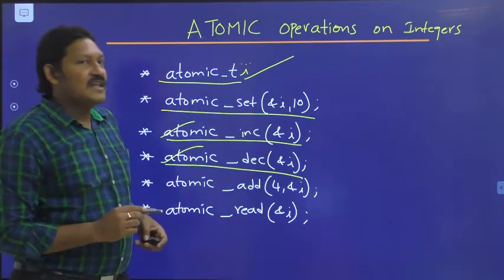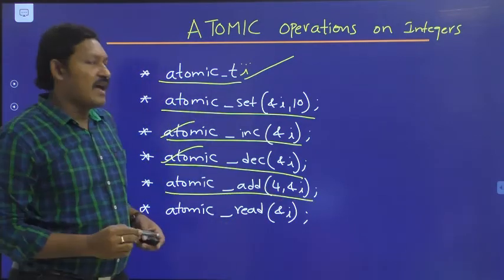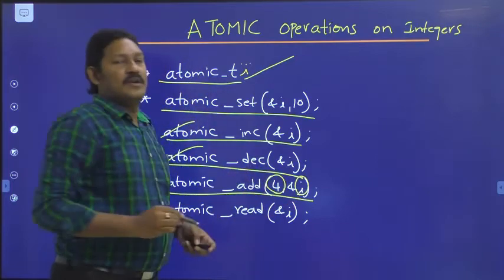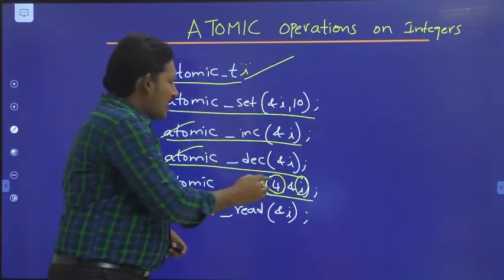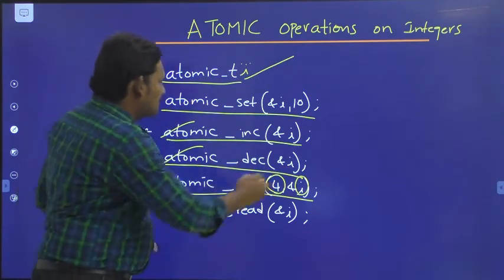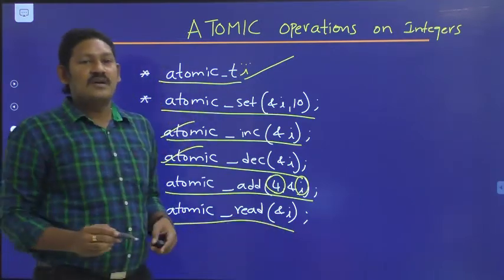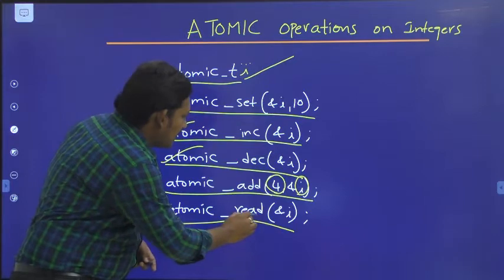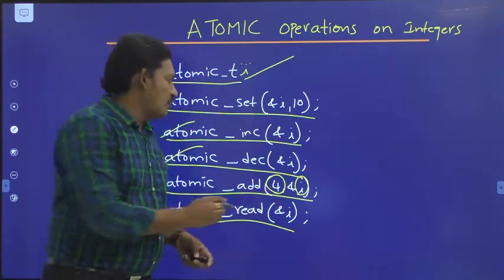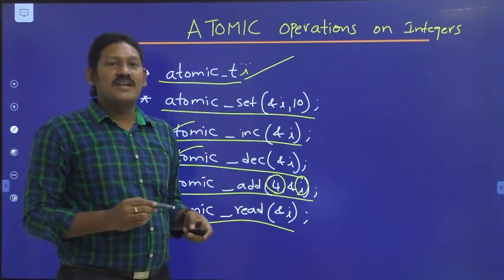Similarly, atomic_dec automatically decrements the value. atomic_add adds a given value to the variable — the variable is assigned some value and this new value is added to it. The last one, atomic_read(&i), reads and returns the value of i. These are the examples for atomic operations on integers.